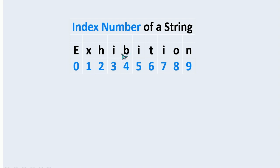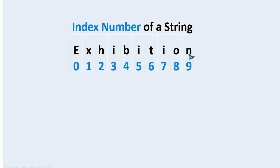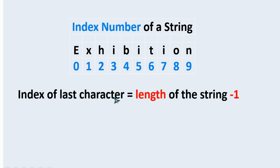Each character in a string will have its index number. Here I have given the example: E is having 0 as index number. The index number always starts with 0 and keeps continuing until the last character. Here, the last character has 9 as its index number. If the length of the string is 10, the last index is 1 less than the total length. So, index of last character equals length of string minus 1.